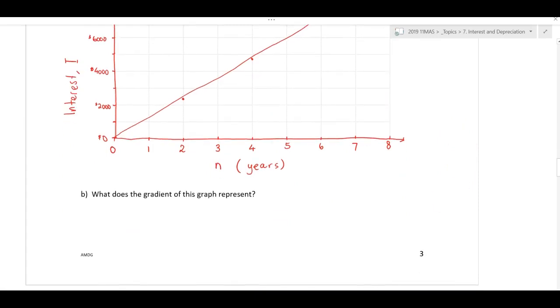Now, what does the gradient represent? How much it's increasing per year. Okay, gradient, rise over run if you like. How much interest I get for every year. So, my gradient is how much interest is earned per year.